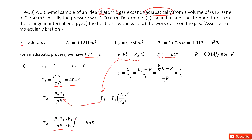We still need the parameter gamma. By definition, γ = Cp/Cv, and Cp = Cv + R. For a diatomic gas, you can check your textbook: Cv = 5R/2. Therefore, γ = 7/5. Now we have all the quantities in the function and can input them to get T2.